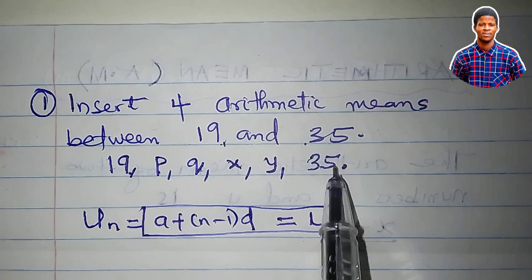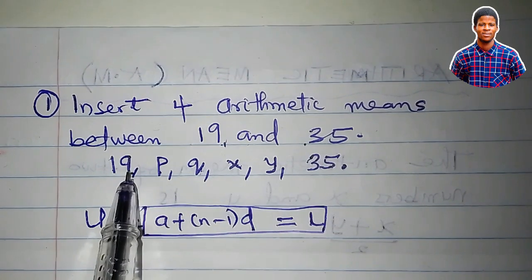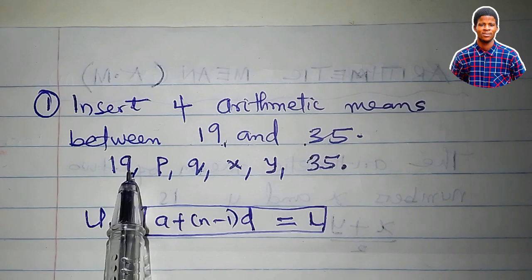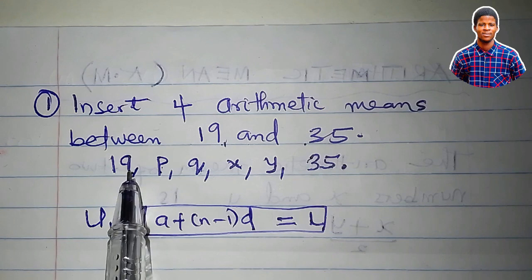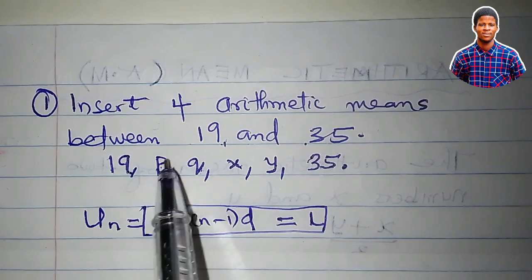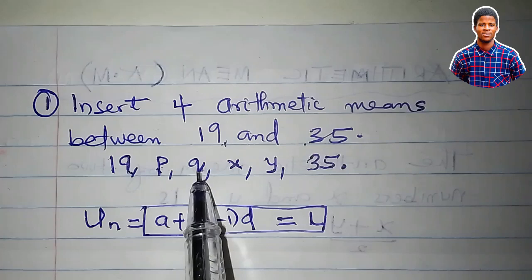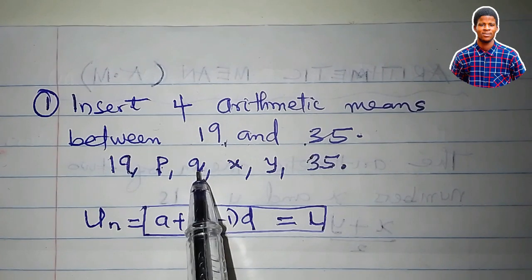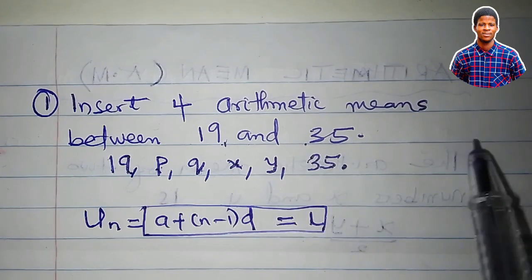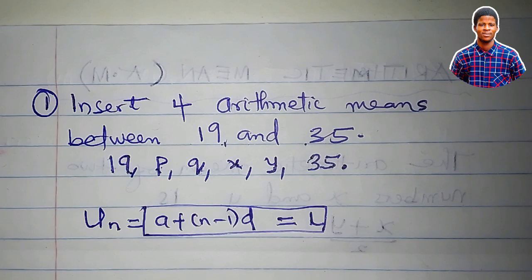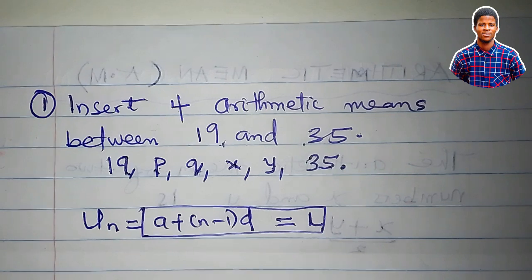The last term of this progression is 35. The first term is 19. You know that for a linear sequence, to get the next term, it's just for me to add the common difference to the first one. I will get the second one, add the common difference to the second one, I will get the third one, and so on and so forth. So the problem now is to determine the common difference. That is the point.